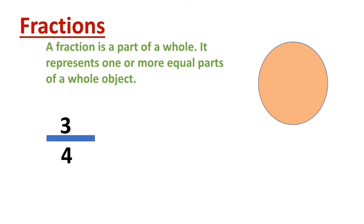Look at the fraction 3/4 or 3 fourths. The number above the line is called the numerator. It indicates the number of equal parts considered.